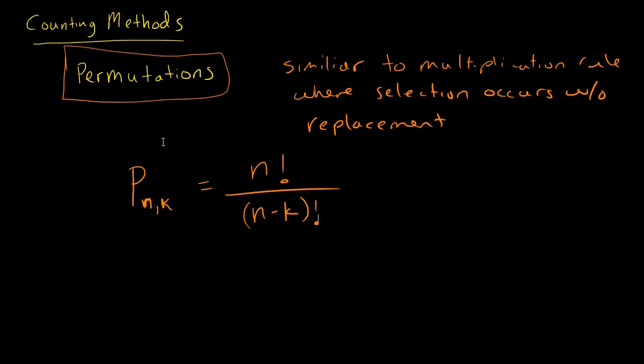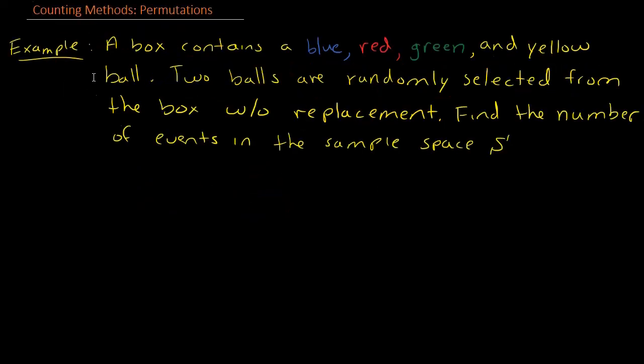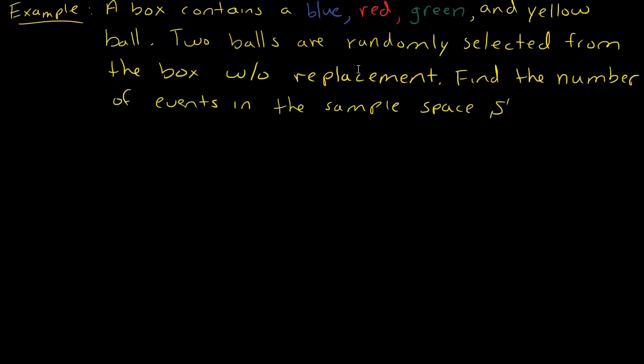So suppose we have a box that contains a blue, red, green, and yellow ball. Two balls are randomly selected from this box without replacement. This is very important, without replacement.